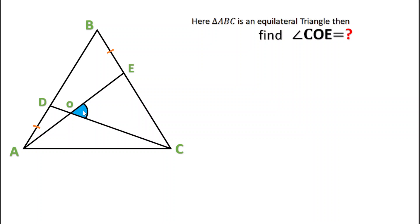Now we can see that in triangle ABE and triangle CAD, AB is equal to AC.